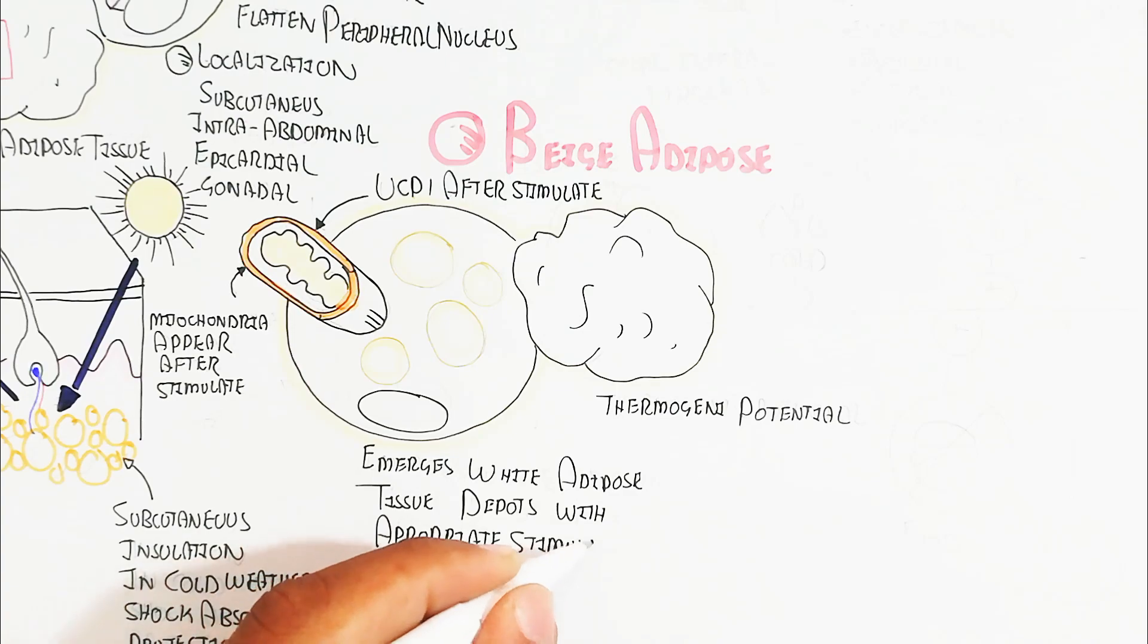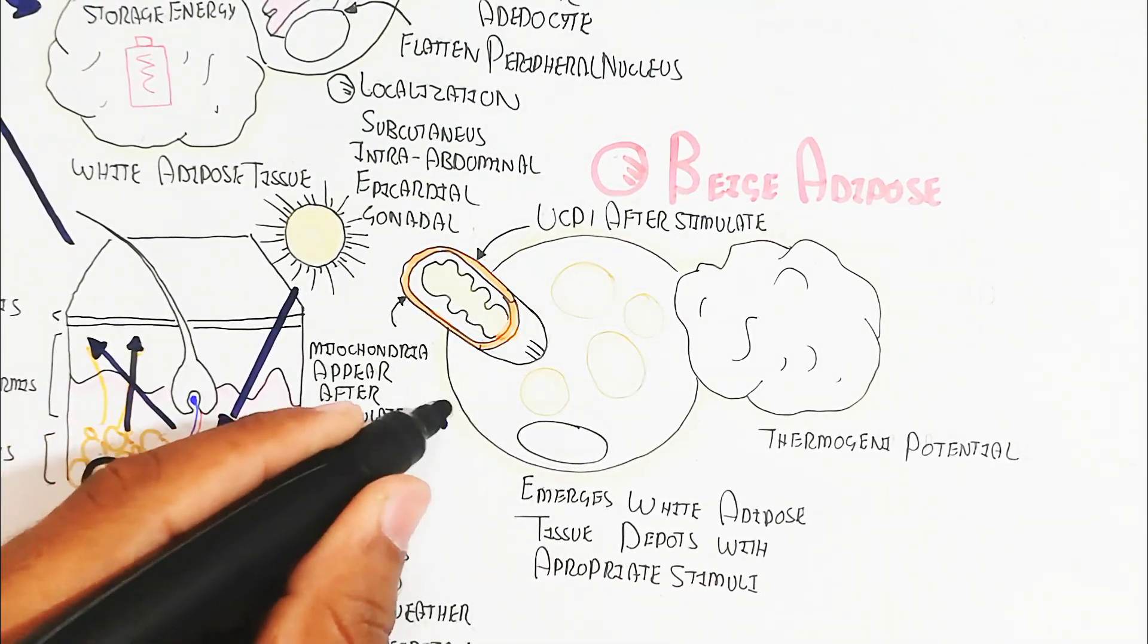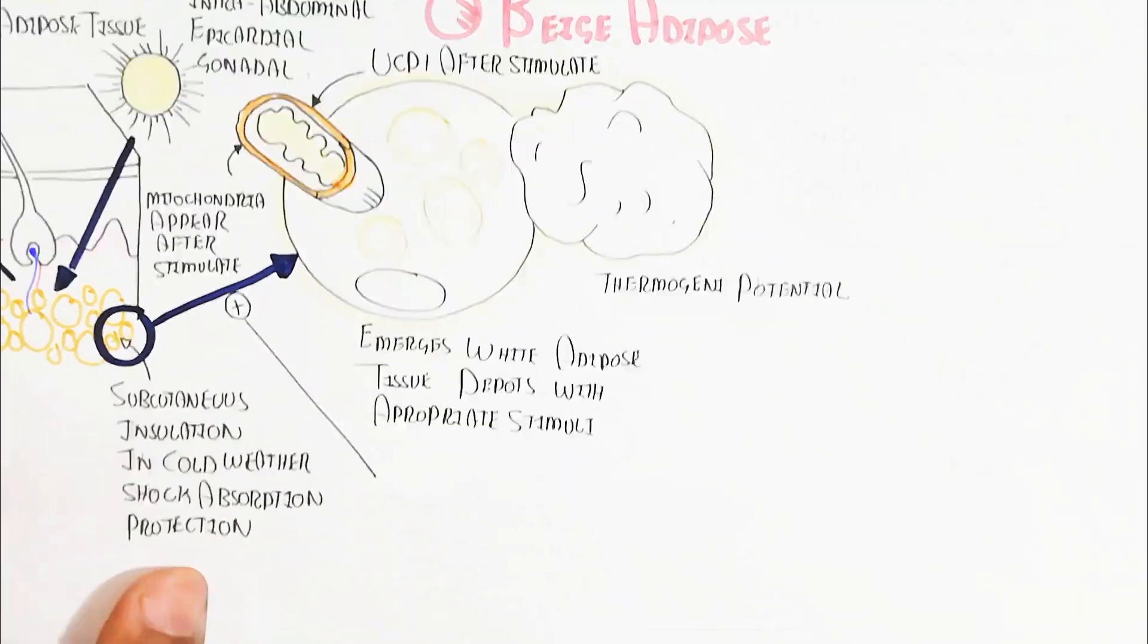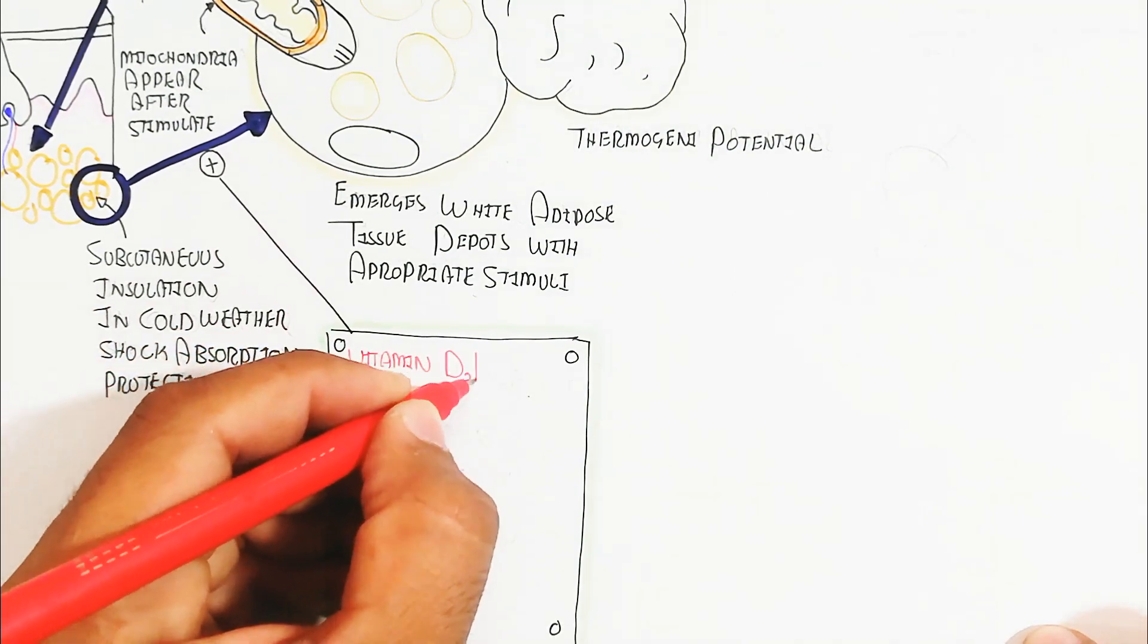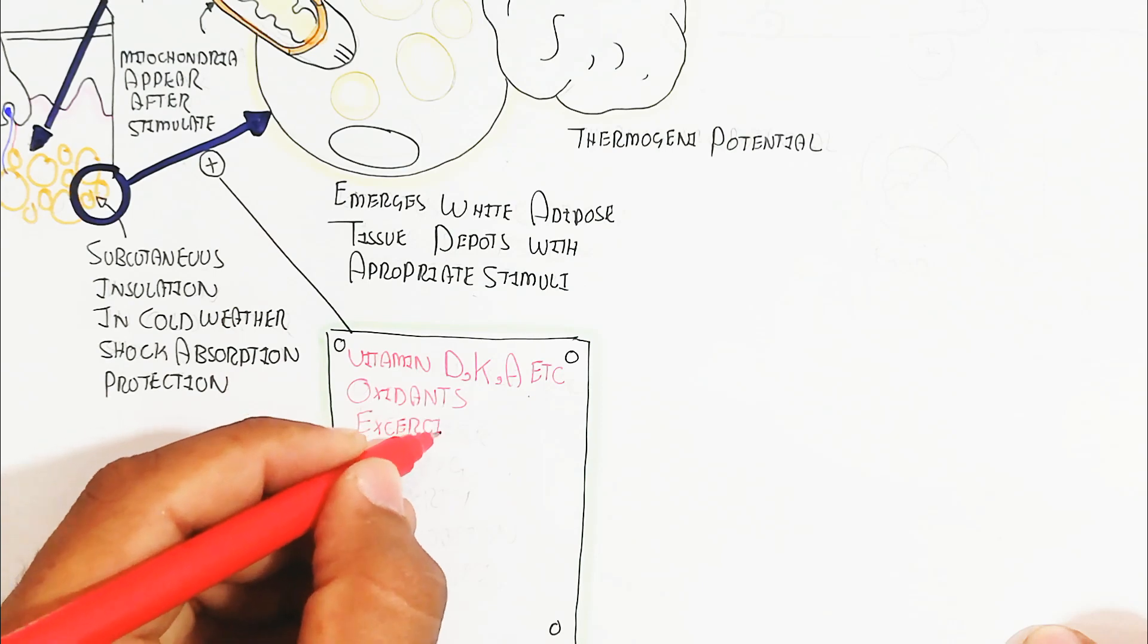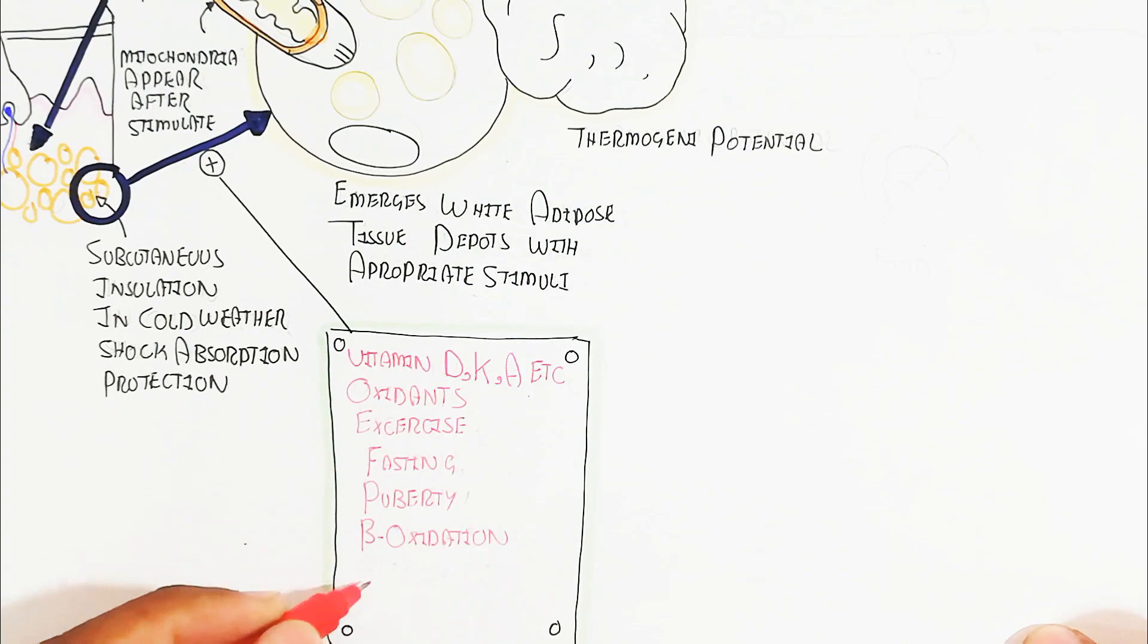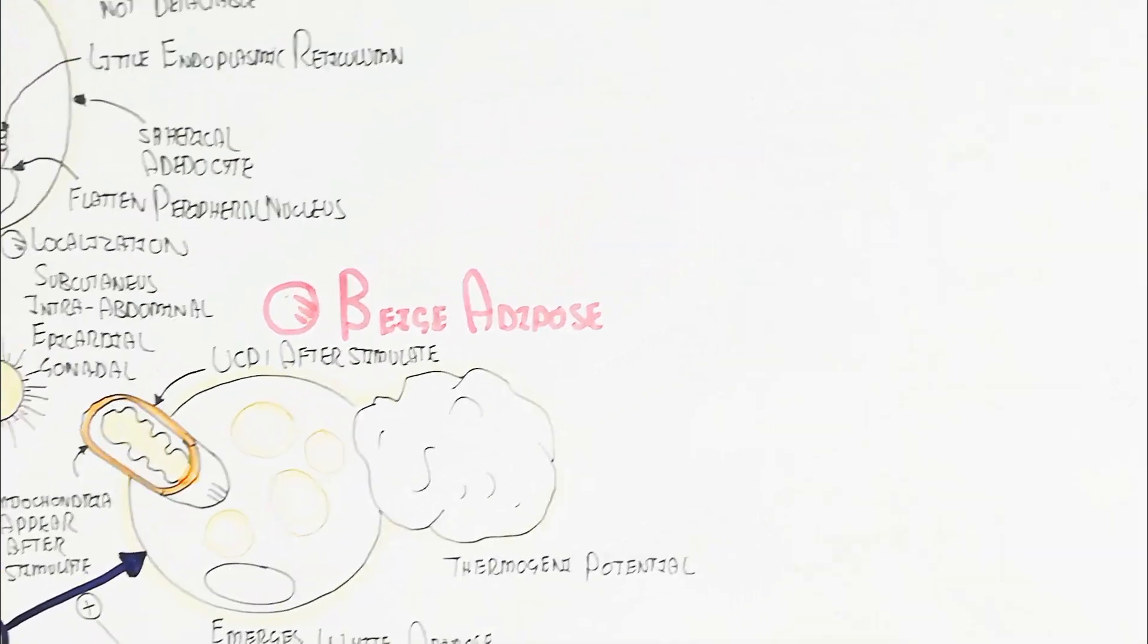And emerges from white adipose tissue with the appropriate stimuli. For example, stimuli from the white adipose tissue will convert beige adipose tissue from vitamin D, K, A, etc. On the other hand, the oxidants, exercise, fasting, puberty, and beta oxidation as well as ketogenesis are important for the conversion of beige adipose tissue.